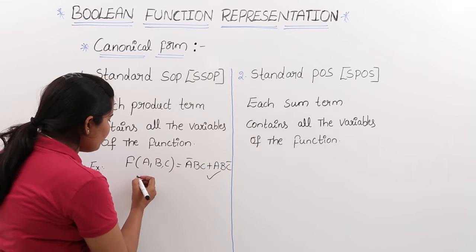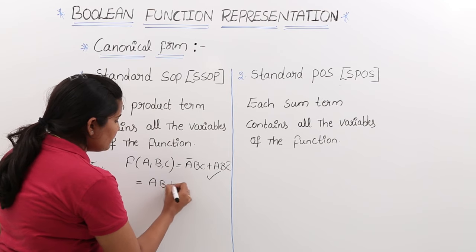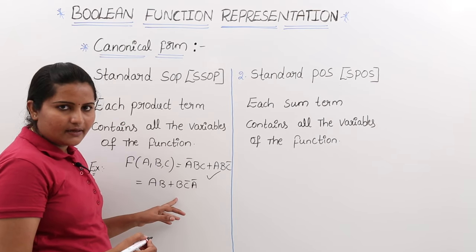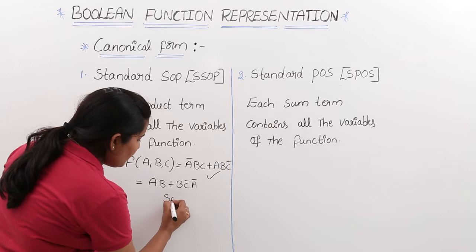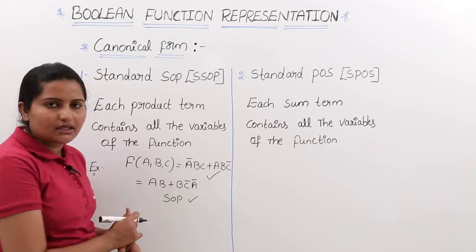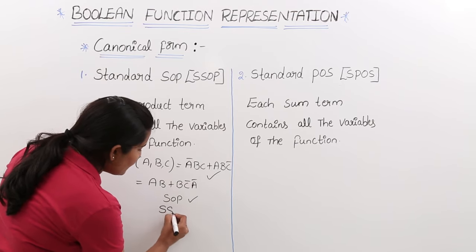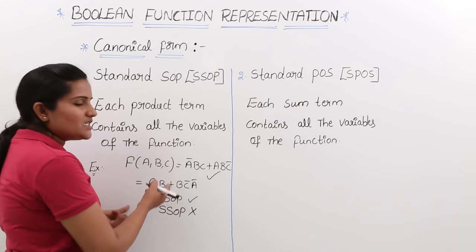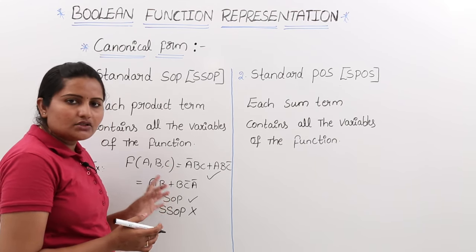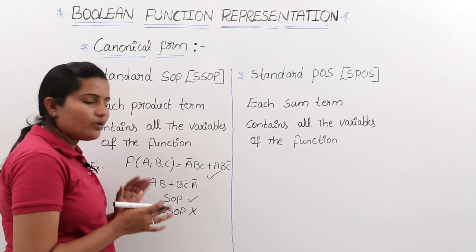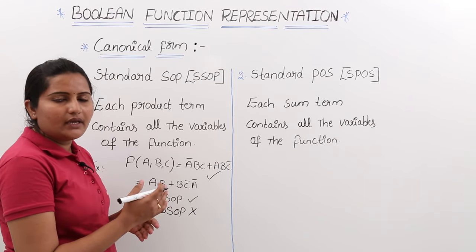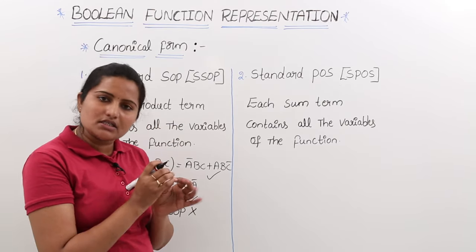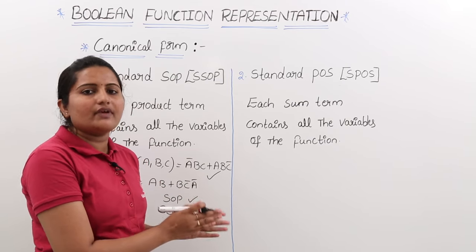For example, if your function is in the form a·b + b·c-bar + a-bar — a three-variable function — by seeing itself we can say this is SOP (sum of products) because all product terms are summed together. This is SOP but not standard SOP. Why? Because in this expression, see the first product term: c is missed — the trace of c is missed. So this is not a fulfilled standard SOP form. To convert into standard SOP we have a procedure we will discuss later. Standard SOP means all product terms contain all the variables of the function.